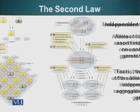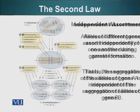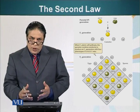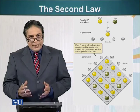Therefore, with this data, Mendel came up with his second law: the Law of Independent Assortment. Alleles of different genes assort, meaning they are divided into gametes independent of one another during gamete formation. The segregation of allele A is independent of the segregation of allele B. The Punnett square from the dihybrid cross demonstrates this. We will continue our discussion of genetics in the next module.